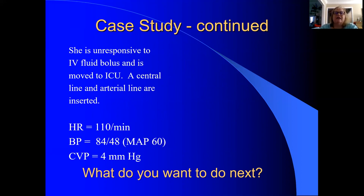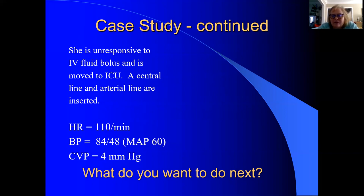Our patient is unresponsive. We've given her some fluid and we're moving her to an ICU. We talked about hemodynamic monitoring — we're not going to be calculating formulas. We'll insert a central line and an arterial line so that with pressure transducers we can get a much better understanding of her parameters. Her heart rate remains 110. Her blood pressure is 84 over 48 with a mean arterial pressure of 60 — a measured one from our arterial line. Her blood pressure has come up a little bit, but not much considering how much fluid we've given her.